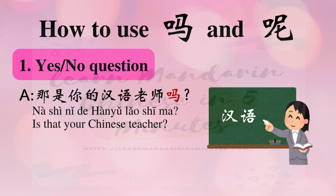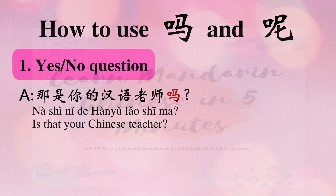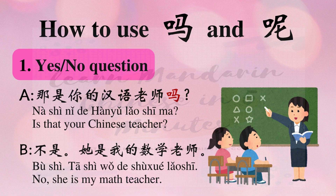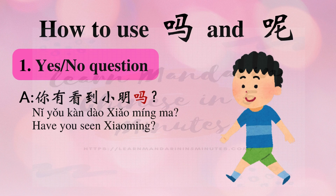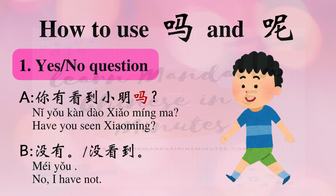那是你的汉语老师吗? 不是，他是我的数学老师。 Another example: 你有看到小明的猫吗? You can say 没有 or 没看到. So for yes and no questions as shown in the examples, we cannot use 呢. It is incorrect to say 那是你的老师呢? or 你有看到小明呢?